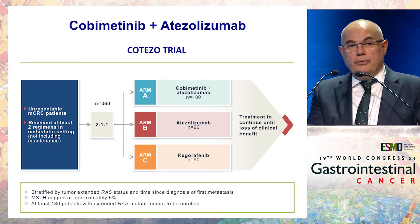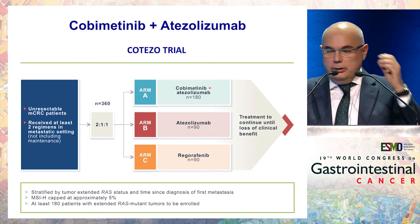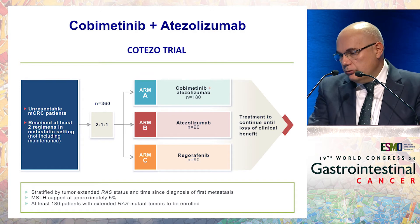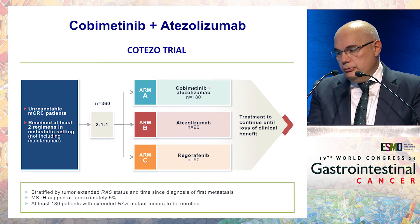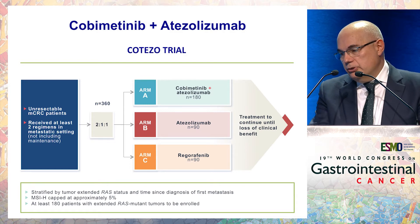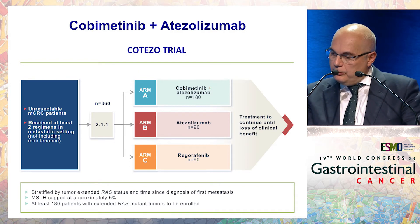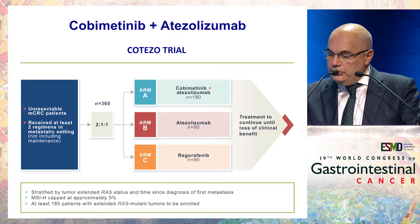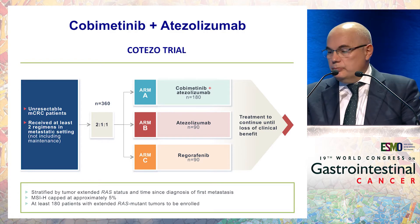On the basis of this limited clinical data, the COTEZO trial is comparing the combination of cobimetinib plus atezolizumab versus atezolizumab as a single agent or versus one of the standards of care, regorafenib, in this particular setting. This study is especially enriched for patients with RAS mutations and MSS tumors.